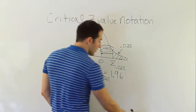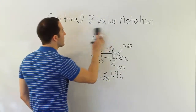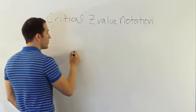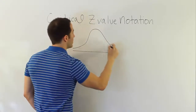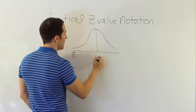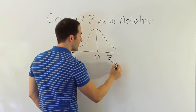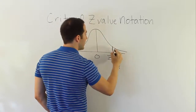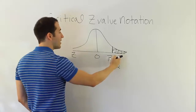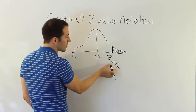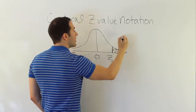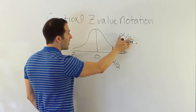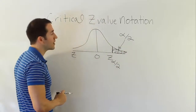Just one more — a more abstract one that doesn't involve actual numbers. What if I was looking for z alpha divided by 2? How much area would be in the upper tail? The subscript here is alpha over 2, so the area in the tail would be alpha over 2. Whatever you see as a subscript is the area you have in the tail beyond that point on the number line. That's the idea of critical z-value notation.